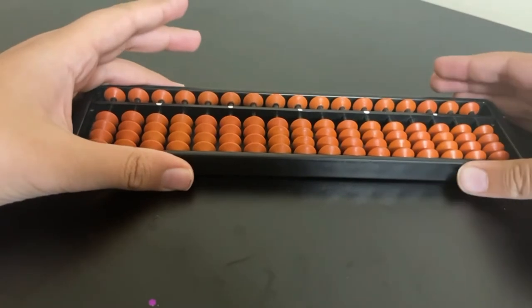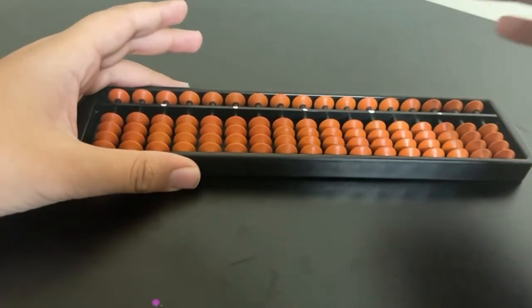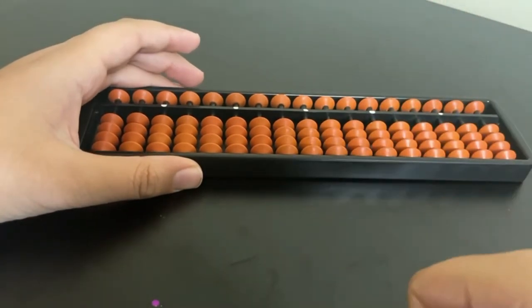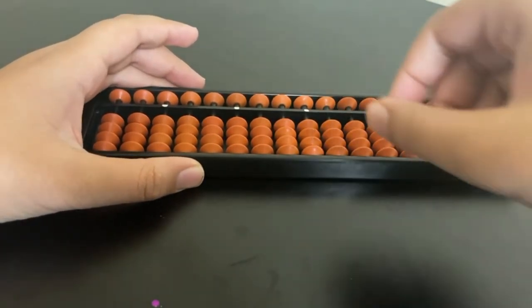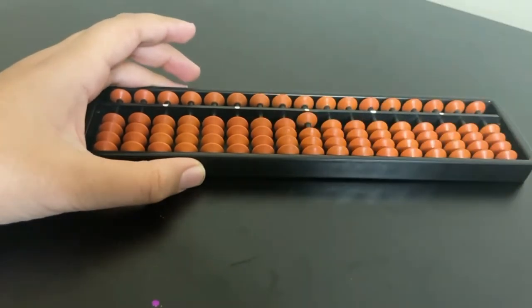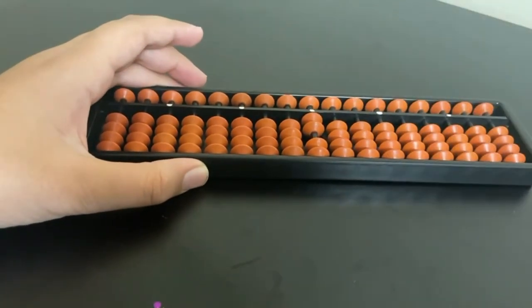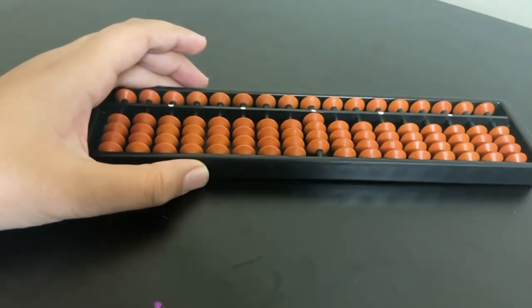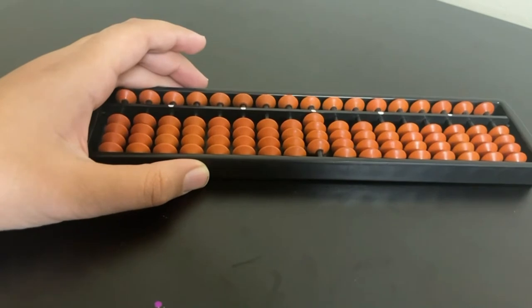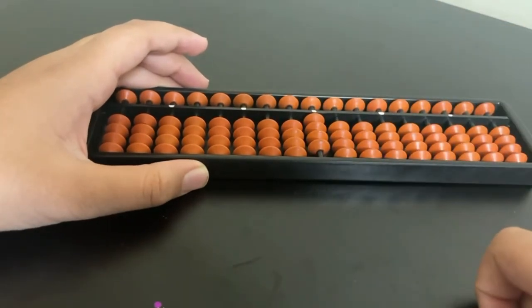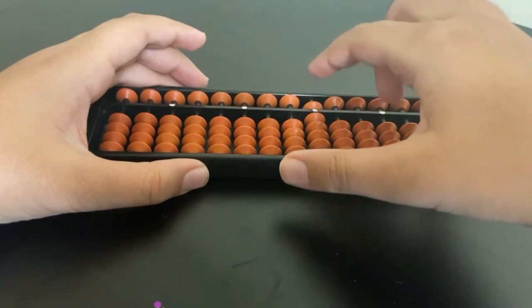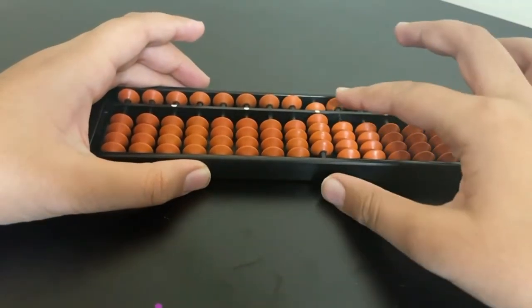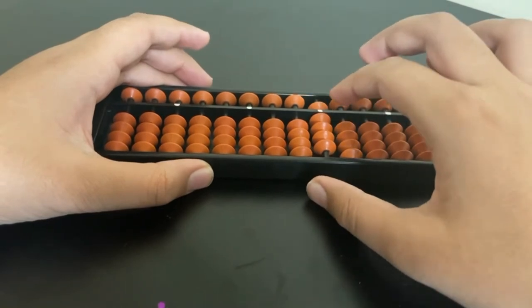So once you find the home rod, hold your abacus like this. The home rod is the ones digit, so that's where all the ones go. For example, this bead equals one, this bead is two, then three, then four. But now you're going to ask, how do you make nine and what is this one bead for? Actually, when you put this down, all these beads are the value of five, and the ones that are below the dot are all values of one.